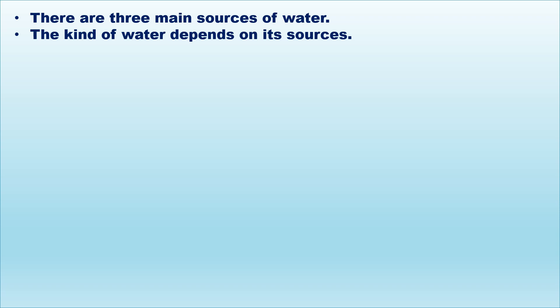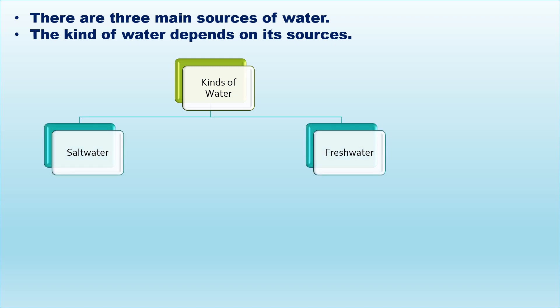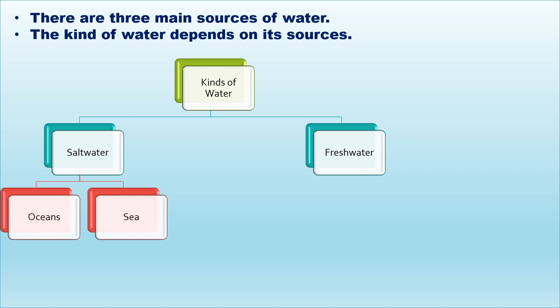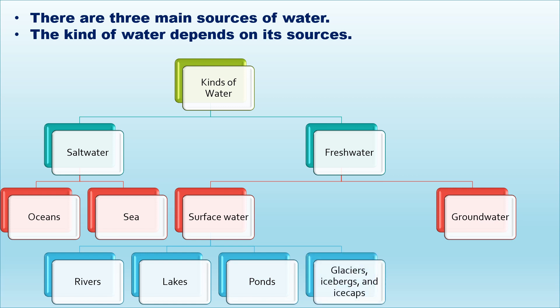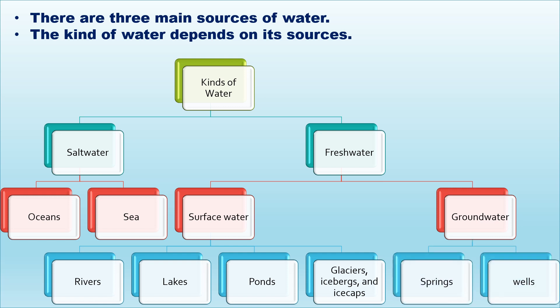There are three main sources of water. The kind of water depends on its sources. The kinds of water are the salt water or sea water, and the fresh water. The sources of salt water are the oceans and the seas. The sources of fresh water are surface water — the water that's on the Earth — and groundwater, the water that's in or within the Earth. Surface water includes rivers, lakes, ponds, glaciers, icebergs, and ice caps. While the sources of groundwater are springs and wells. So the three main sources of water are salt water, fresh water, and groundwater.